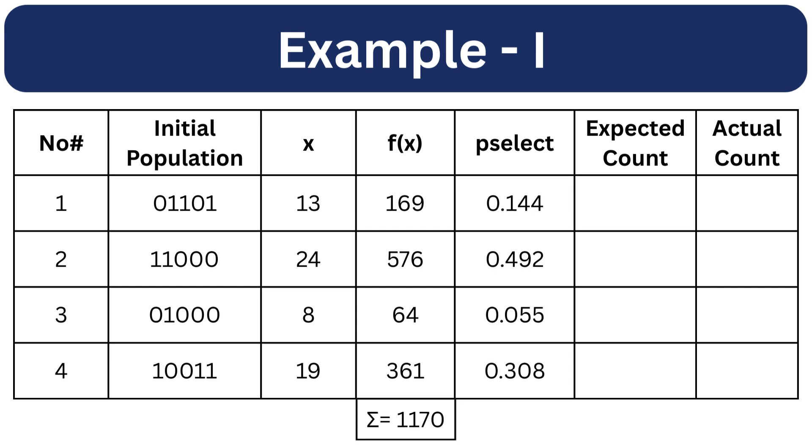Now let's calculate the selection probability for each individual. This is done by dividing each fitness value f by total fitness of the population. Total fitness is the sum of all fitness values, 1170 in this case.